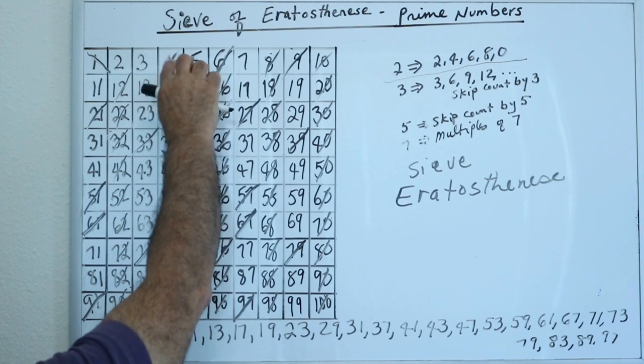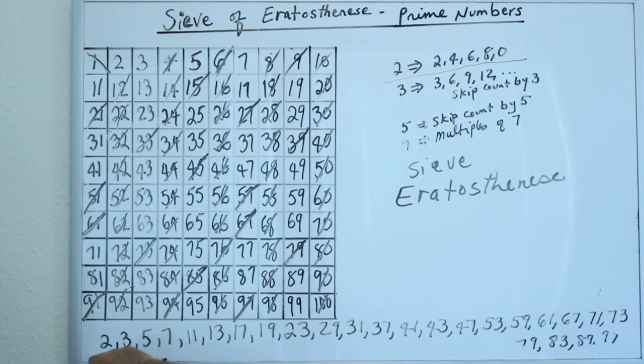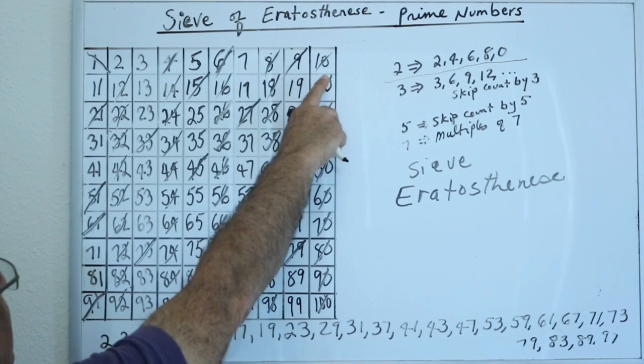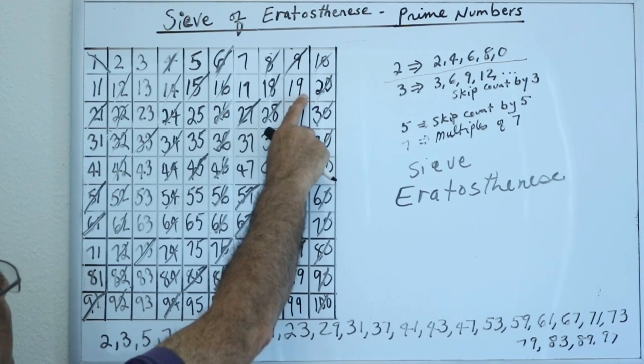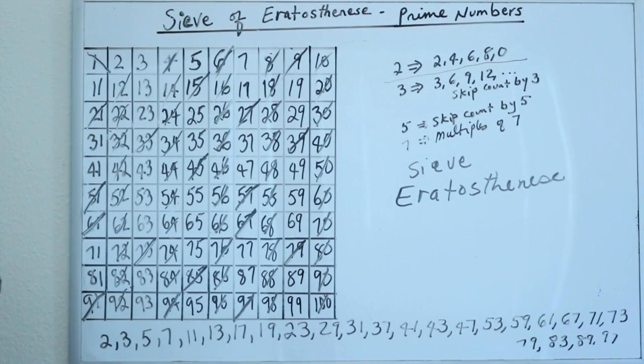Then 4, we're going to skip count by 4. So 4 would be 8 and that would be 12, that would be 16, 20. So we've gone through that.